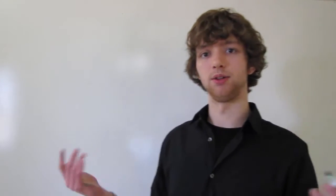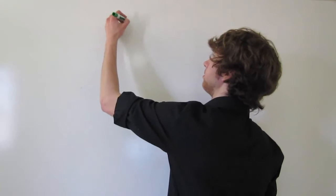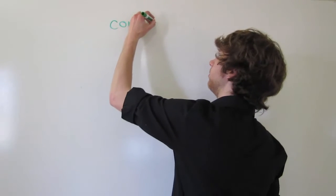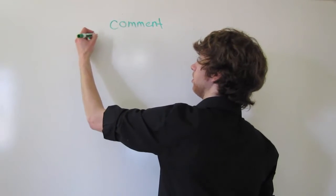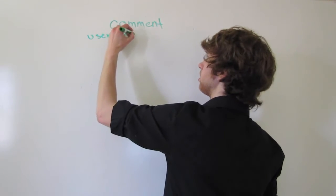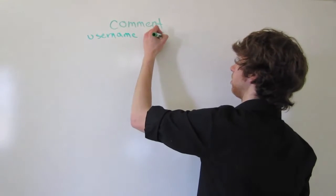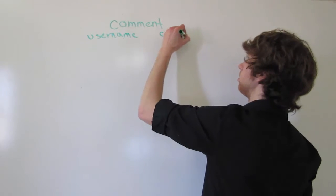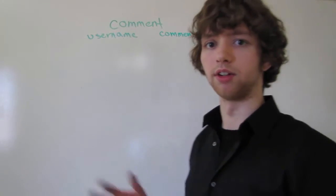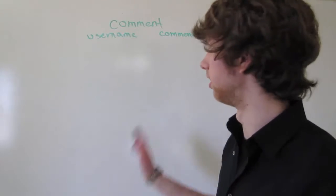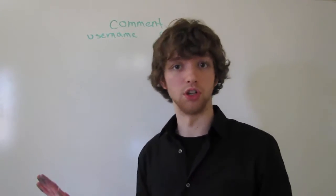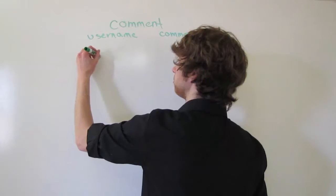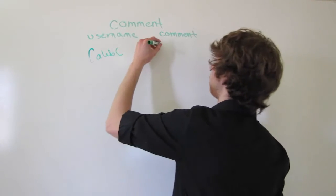It's kind of confusing. Let's say you are bad at database design and you're structuring a comment table. Within it you have a username, the comment, and maybe the blog post or video ID. You don't know what you're doing, so you put the username directly — say 'Caleb C.' — along with the comment name.